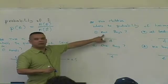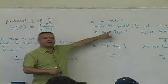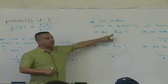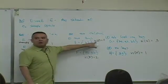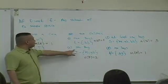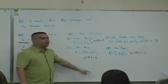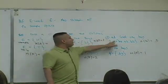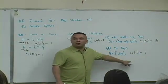Now, determine the number of outcomes associated with the event. The event is having two boys — how many outcomes are associated with having two boys? It's just BB. One. How many outcomes are associated with having one boy? Two. How many outcomes are associated with having at least one boy? Three. No boys? One.